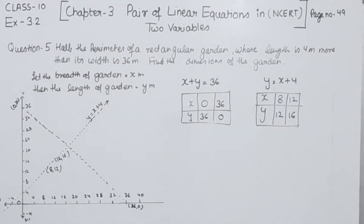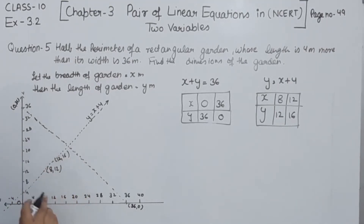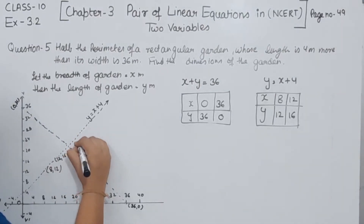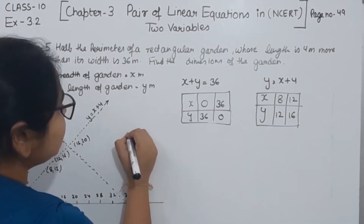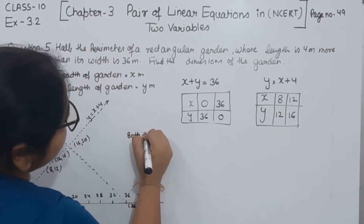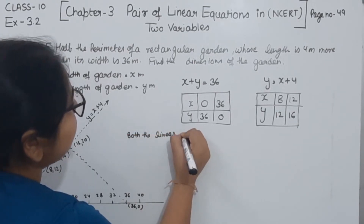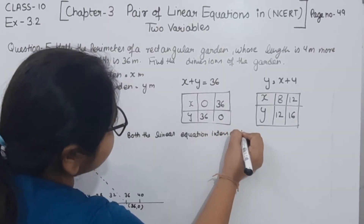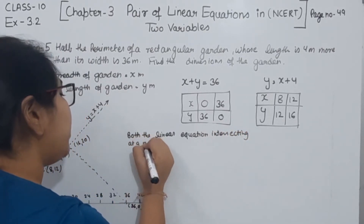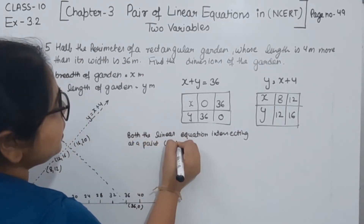Now we have to find the intersecting point for finding the value of x and y. The intersecting point we are having is 16 and 20 — x is equal to 16 and y is equal to 20. Both the linear equations intersect at the point (16, 20).